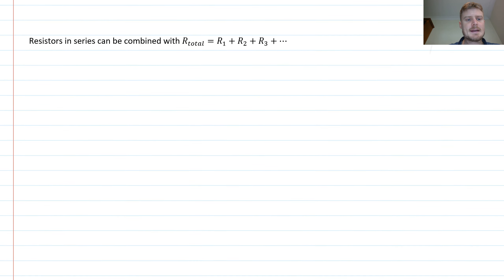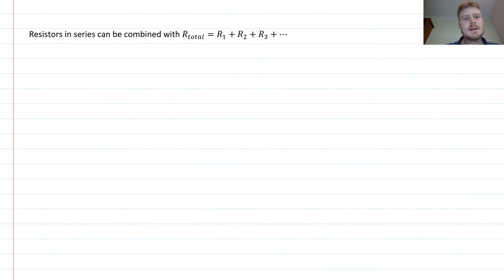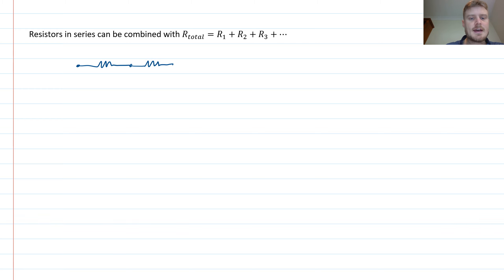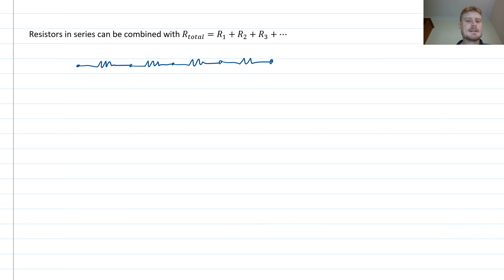The first pattern we need to recognize is when we have resistors connected in series. Resistors connected in series look like this: I have a resistor and then another resistor connected head to tail. I could have a third resistor, and this pattern can continue — basically head to tail. This is when they are connected in series.